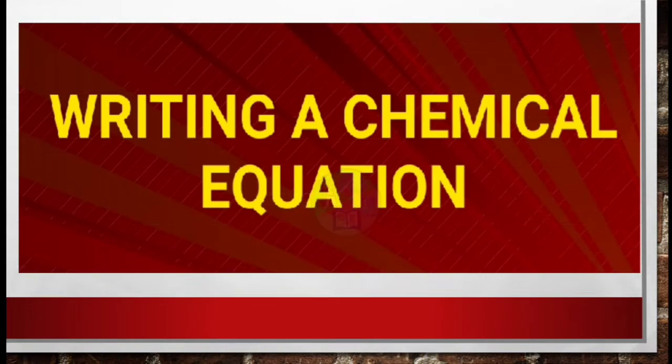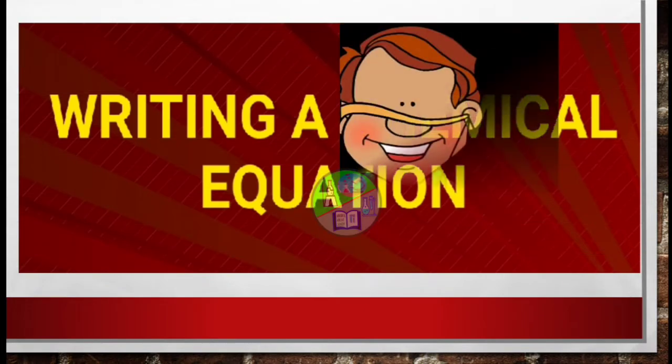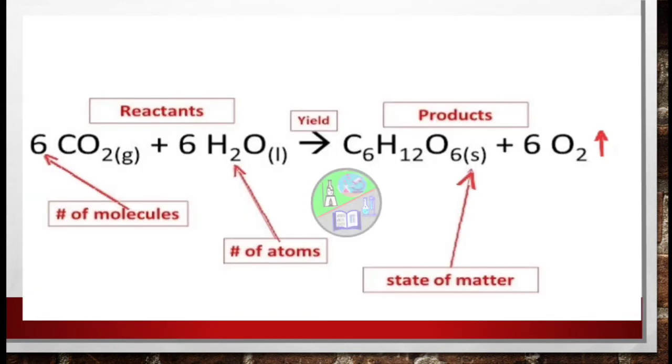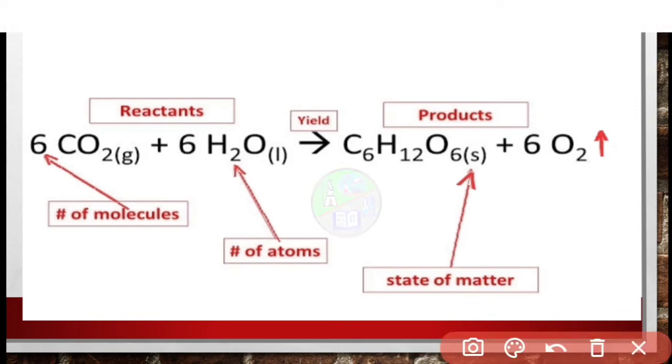The next thing that must come in our mind is how to write or represent a chemical equation. Here you can see an example. First of all this one is the reactant side of the equation and this is the product side, and all the substances or molecules written here are in their own symbols and formulas.